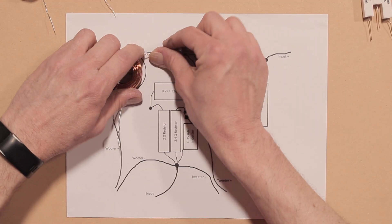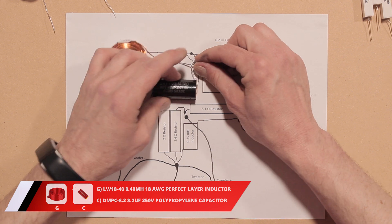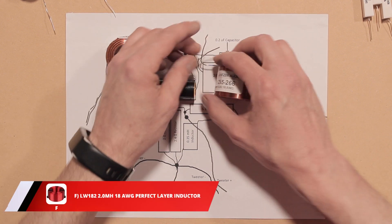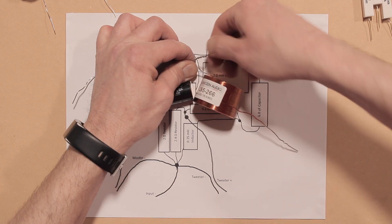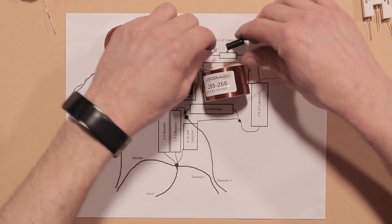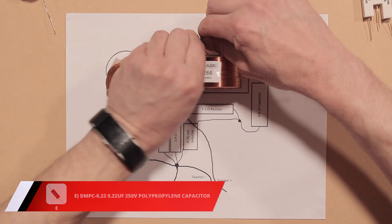Connect the right side of Parts G and C. Then Part F to the same GC connection. Then attach E to the GCF connection.